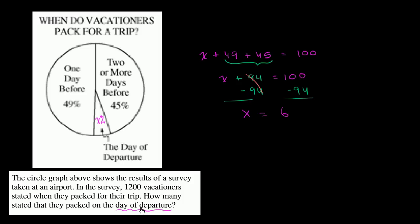Well, they're not asking us the percentage of people, they want how many stated. So 6% of the total 1,200 vacationers, 6% times 1,200 packed on the day of departure, or at least said that they packed on the day of departure.